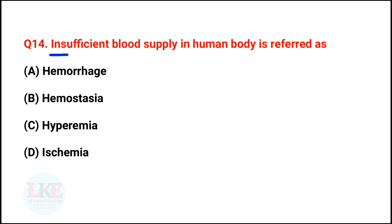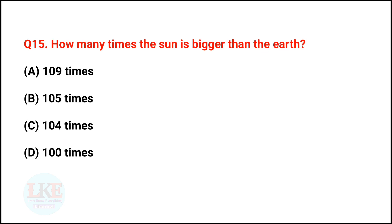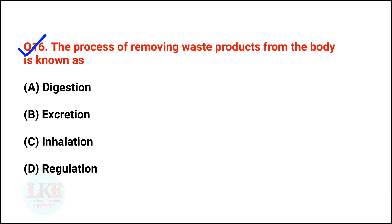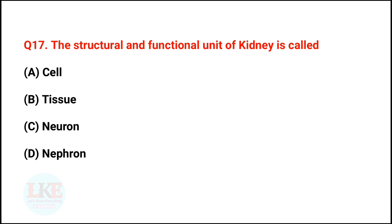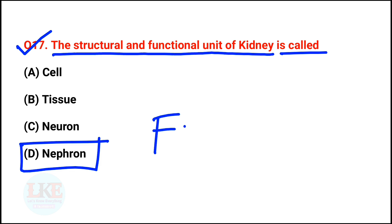Question number 14: insufficient blood supply in the human body is referred to as ischemia. Question number 15: how many times is the sun bigger than the earth? The right answer is option A — 109 times. Question number 16: the process of removing waste products from the body is known as excretion. Question number 17: the structural and functional unit of the kidney is called the nephron. Filtering of blood takes place in the nephron.